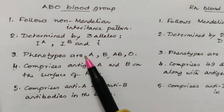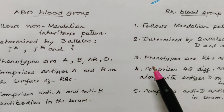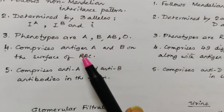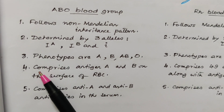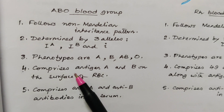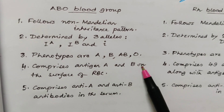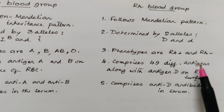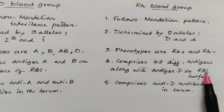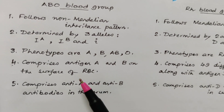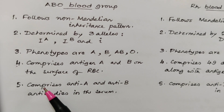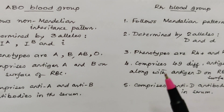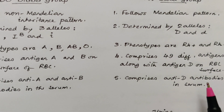ABO blood group phenotypes are A, B, AB, and O, whereas in RH the phenotypes are RH+ and RH−. ABO comprises antigens A and B on the surface of RBCs, whereas RH comprises 49 different antigens along with antigen D on the surface of RBCs. ABO comprises anti-A and anti-B antibodies in the serum, whereas RH comprises anti-D antibodies in the serum.